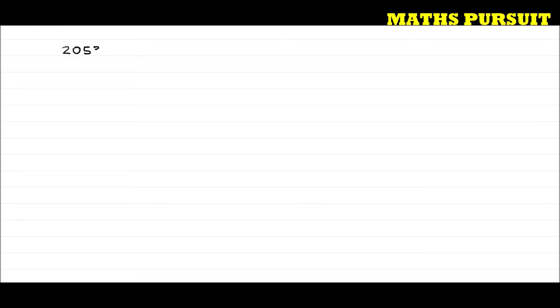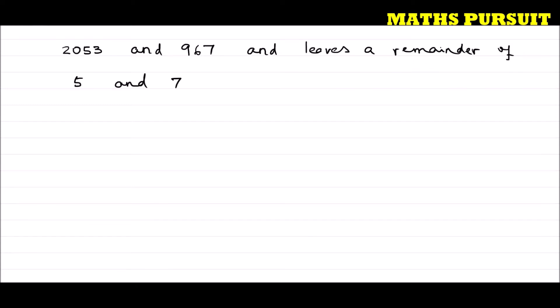We need to find out the largest number that divides 2053 and 967 and leaves a remainder of 5 and 7 respectively. The question is asking us to find out the largest number — or the highest common factor — which divides 2053 and 967 and leaves a remainder of 5 and 7 respectively.